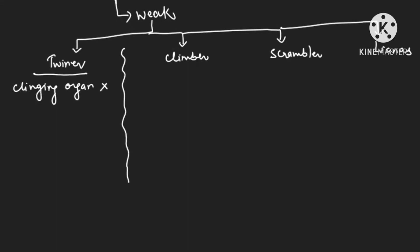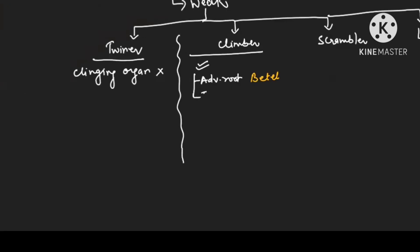Twiners use no clinging organs — no support organ is needed. Clambers use clinging organs such as adventitious roots for climbing; an example is betel (paan). They can also use tendrils for climbing; example is grapes or passiflora.